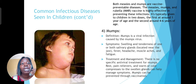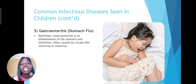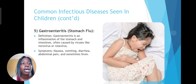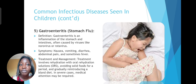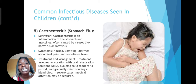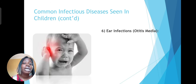Then we have stomach flu, which is inflammation of the stomach and intestines, usually caused by common viruses such as rotavirus. Symptoms include diarrhea, nausea, vomiting, abdominal pain, and sometimes fever. Treatment involves ORS — because there is dehydration caused by the vomiting and diarrhea — and avoiding solid food for a period of time before reintroducing bland diets. Something liquidy for the child to take in as well, and of course medical attention is definitely required.